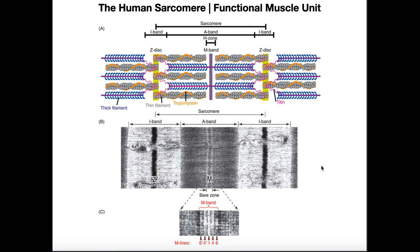Welcome back to Anatomy & Physiology on Catalyst University. In this video, we're going to do two things: examine the anatomy of a sarcomere, and then look at the mechanism of the sliding filament model, which describes how a series of sarcomeres shorten and allow an entire muscle to visibly shorten.